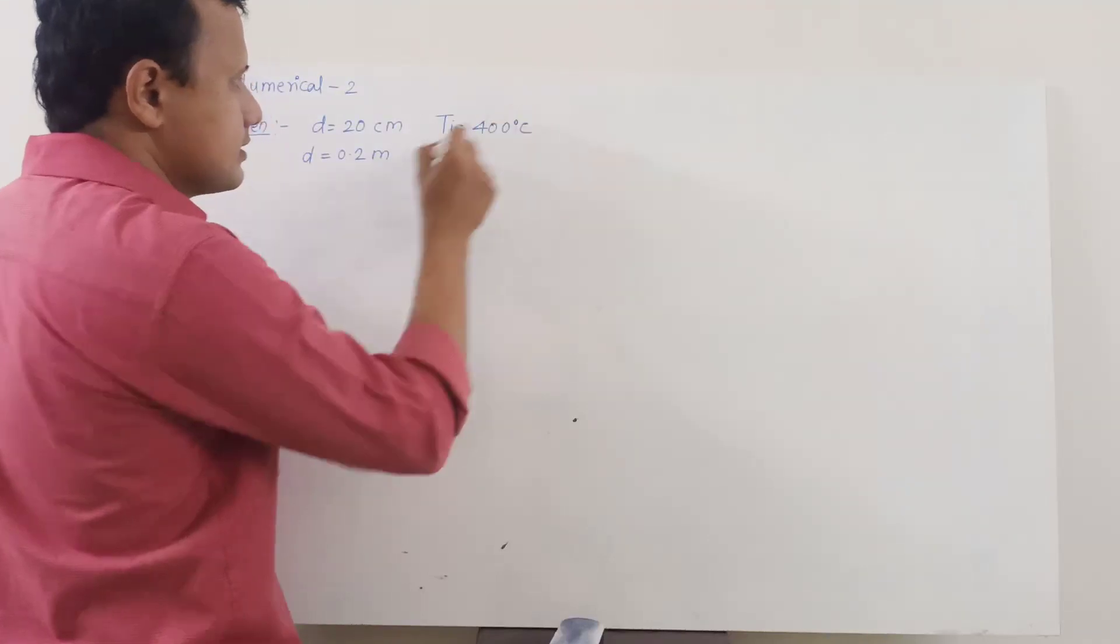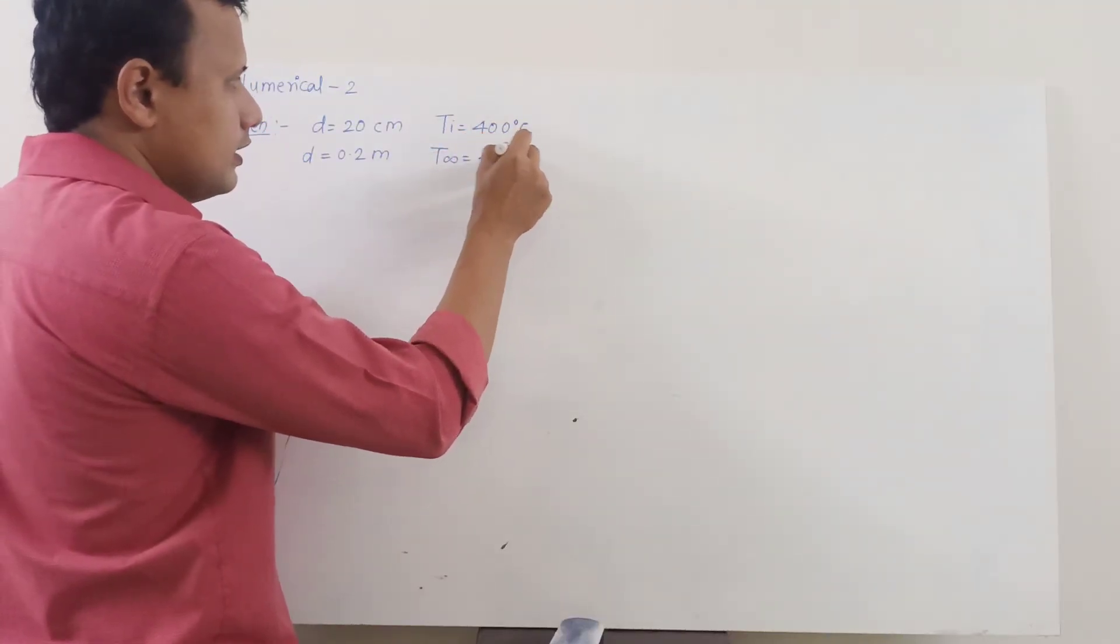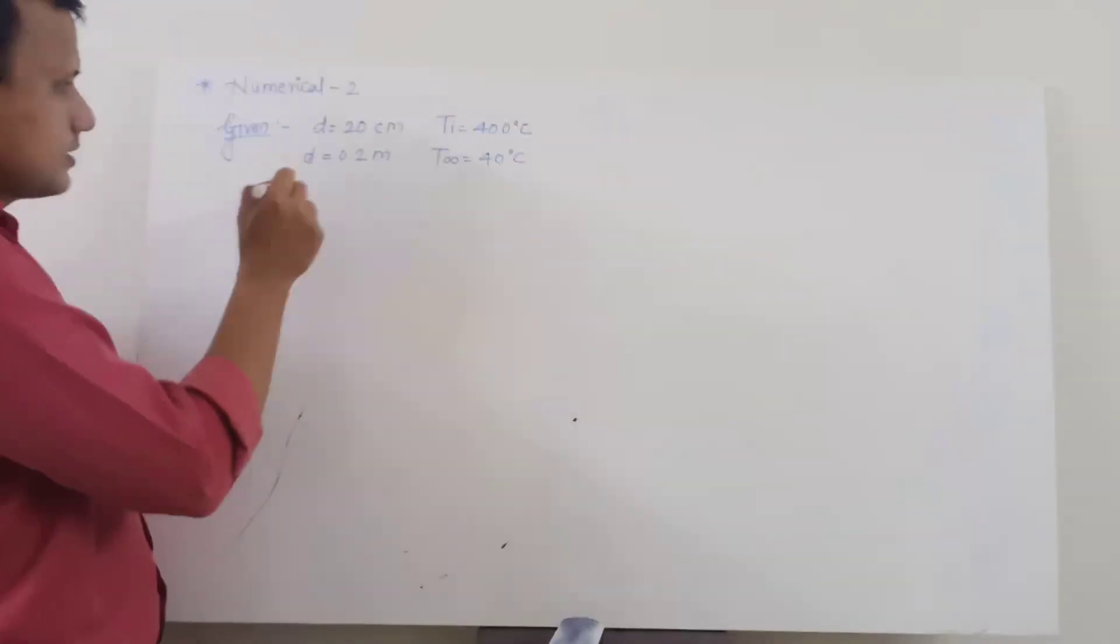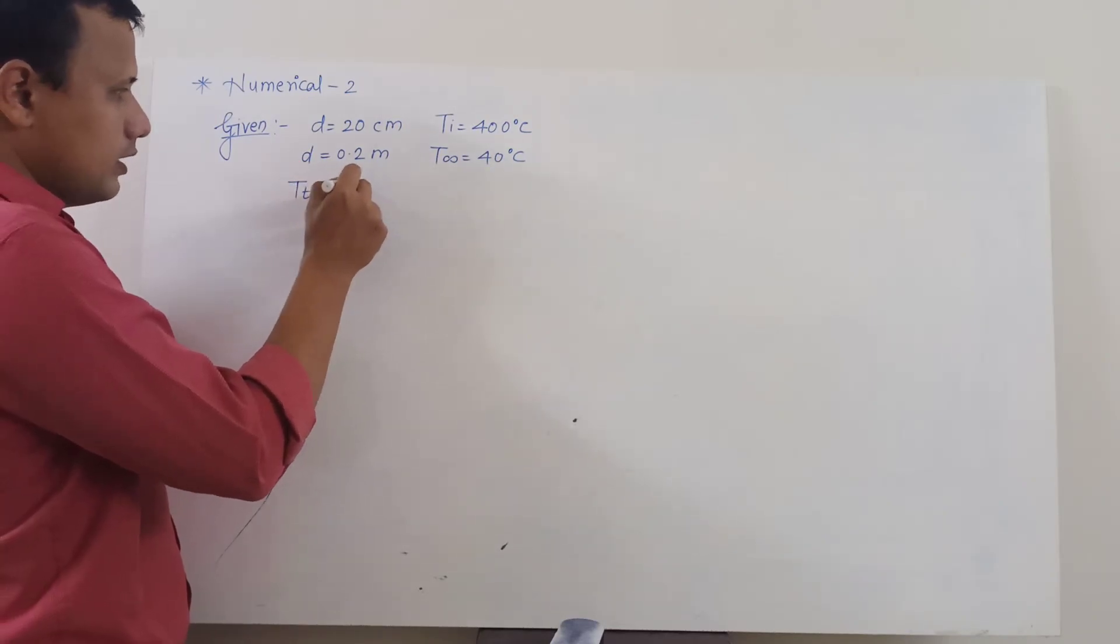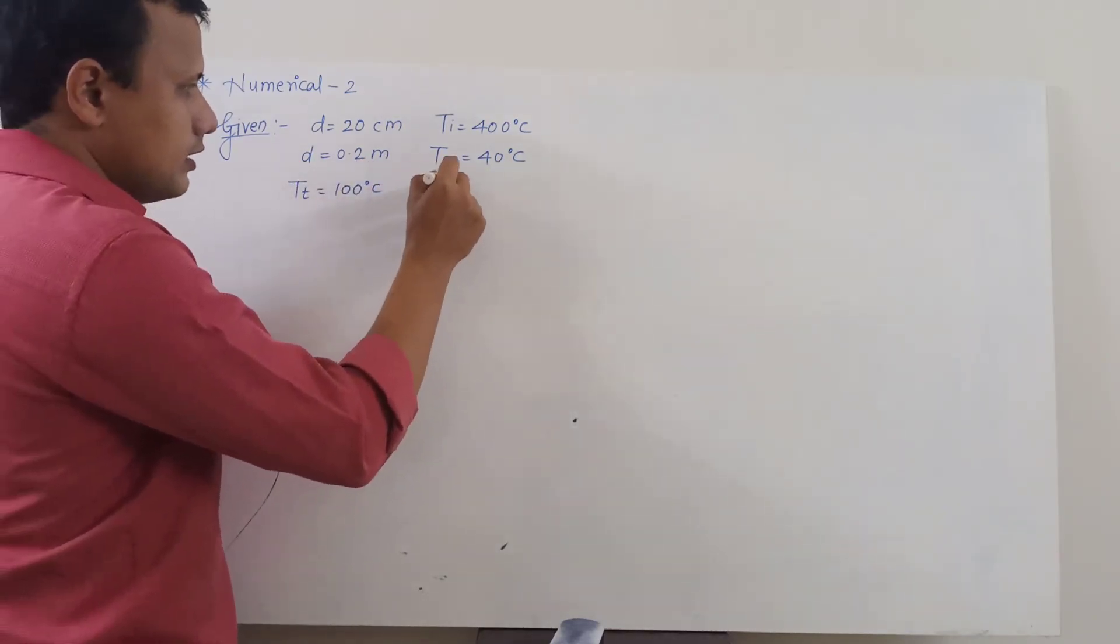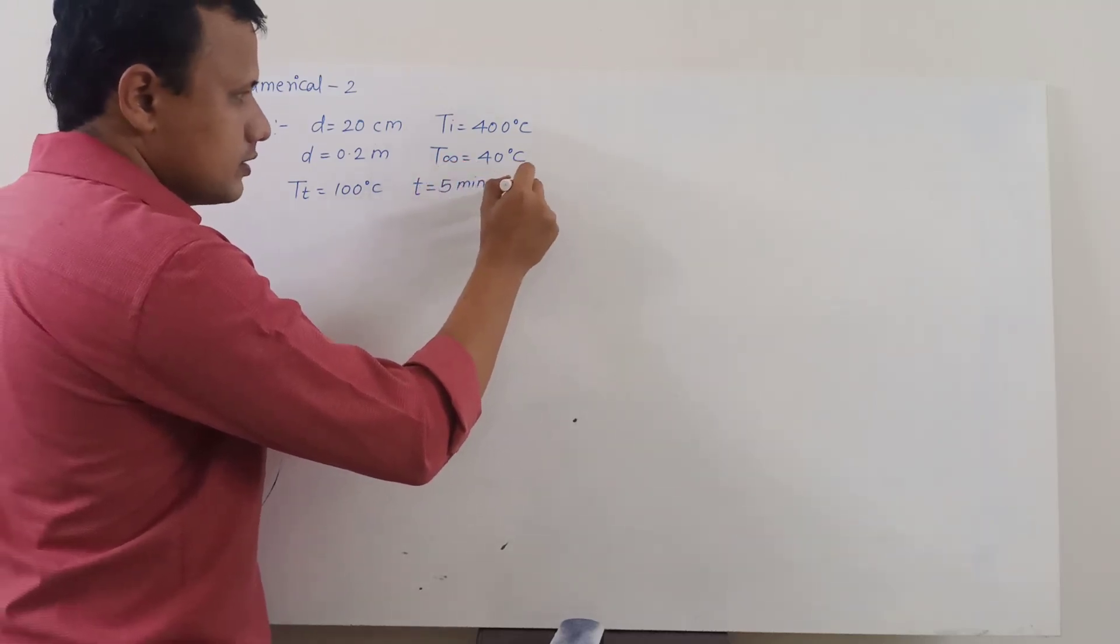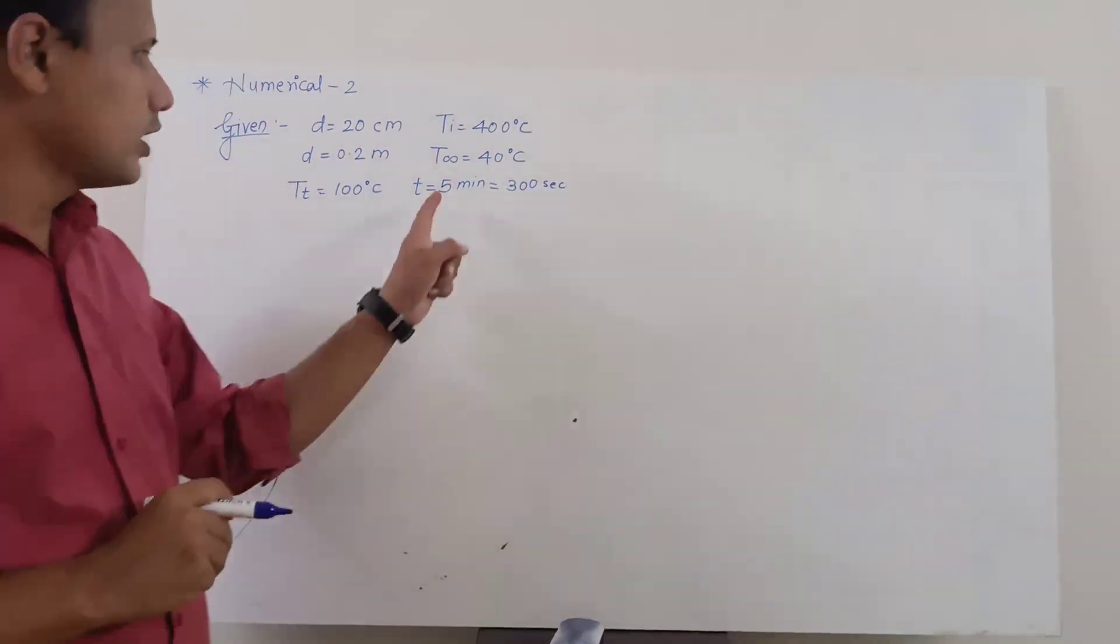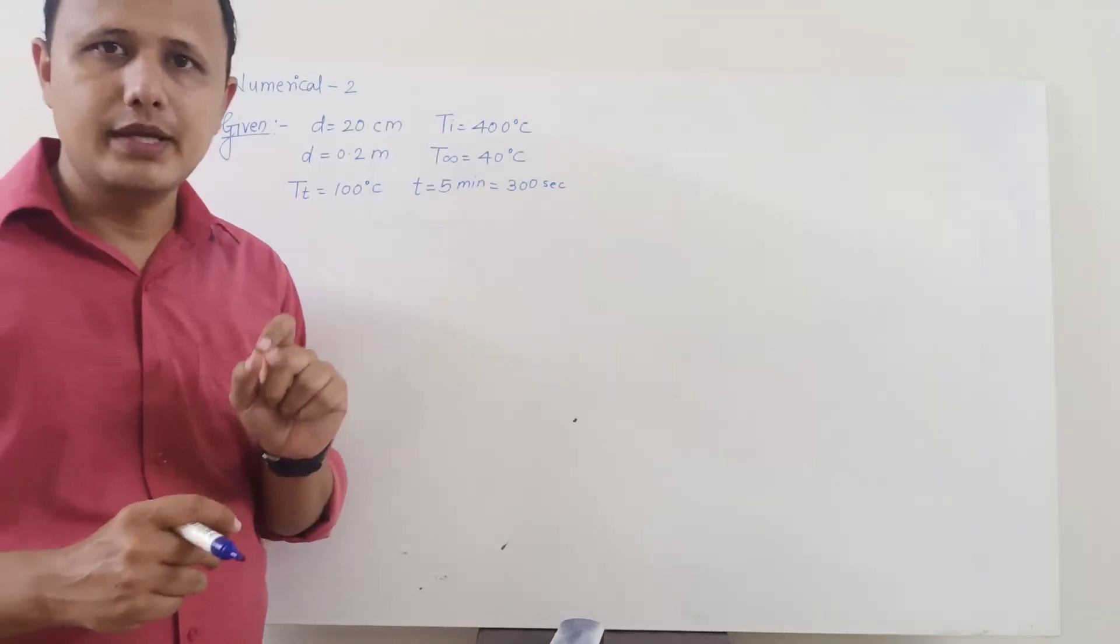The next parameter which is given is the initial temperature, so the initial temperature of this ball is 400 degrees Celsius and the temperature of oil is 40 degrees Celsius. Also we know that after some time the temperature of the ball becomes 100 degrees Celsius.